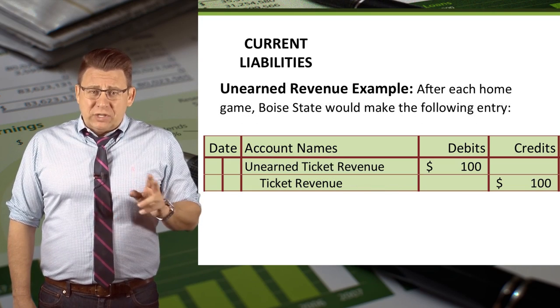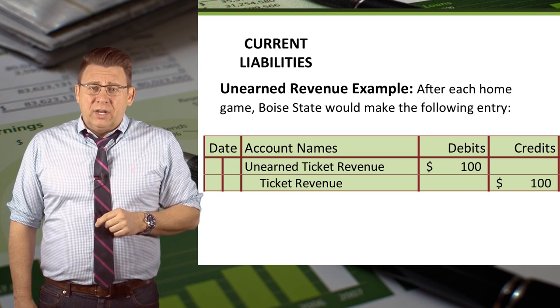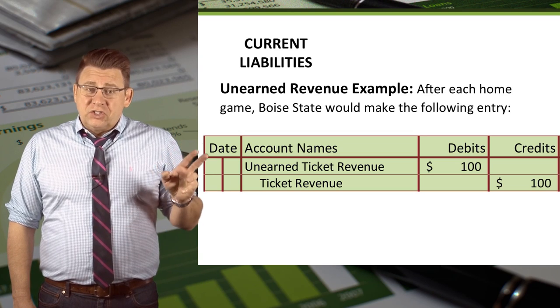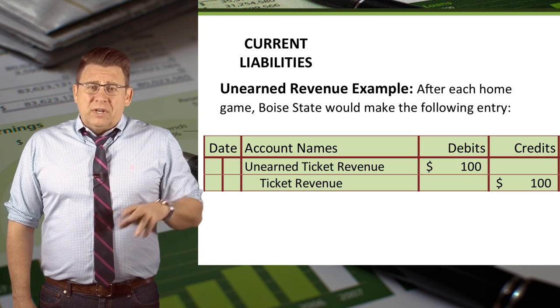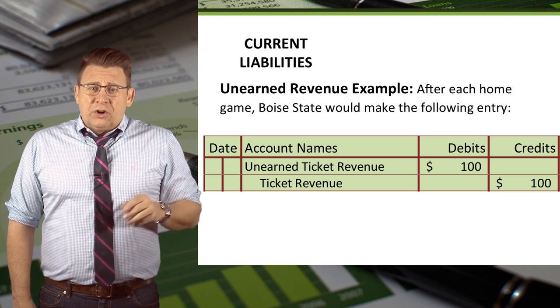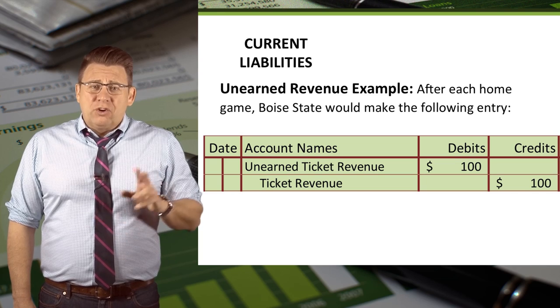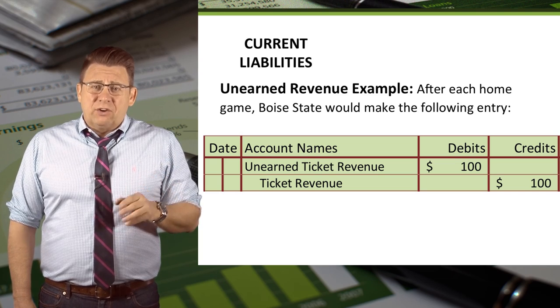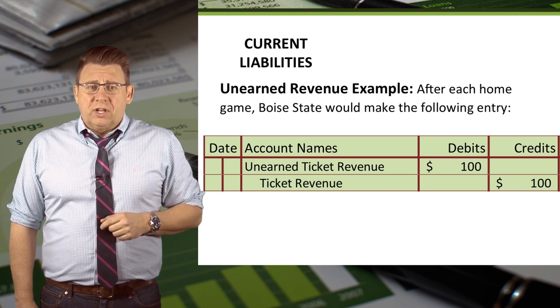After each home game, Boise State would make the following adjusting entry: they would debit unearned ticket revenue and credit ticket revenue for $100.